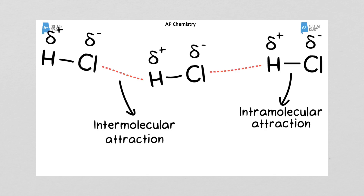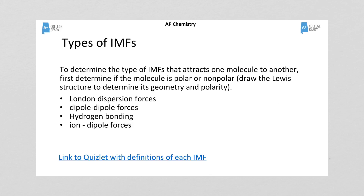There's a good graphic showing the difference — dotted lines represent IMFs versus the covalent intramolecular attraction. Here are the four main types of intermolecular forces. You can't emphasize enough that we only use these terms when talking about a substance we would draw a Lewis structure for that has covalent bonding only. There's a link to a Quizlet that has some definitions and also includes types of solids — it might be a nice review since many students like Quizlets.